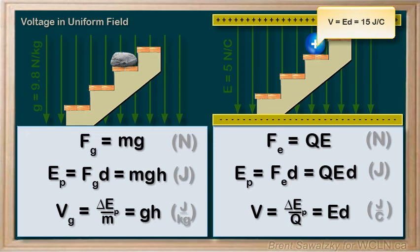Again, this potential value, or voltage, doesn't depend on the charge. For example, our voltage on this third step is 15 joules per coulomb, or 15 volts. To determine the potential energy of a particular charge at this position, we need to specify the charge. Potential energy equals q times v. If it's a 1 coulomb charge, then 1 coulomb times 15 joules per coulomb — the coulombs cancel.